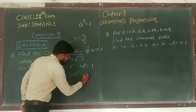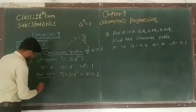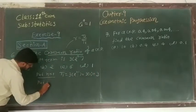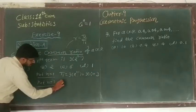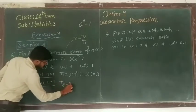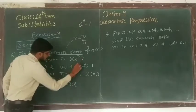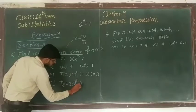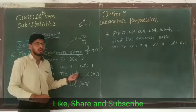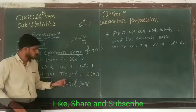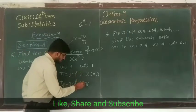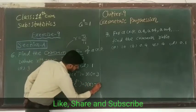Now put n equal to 2. So it gives t2. So 3 bracket 2 raise to 2 minus 1. So it gives 3 bracket 2 raise to 1. 2 ones are 2. So 3 twos are 6.